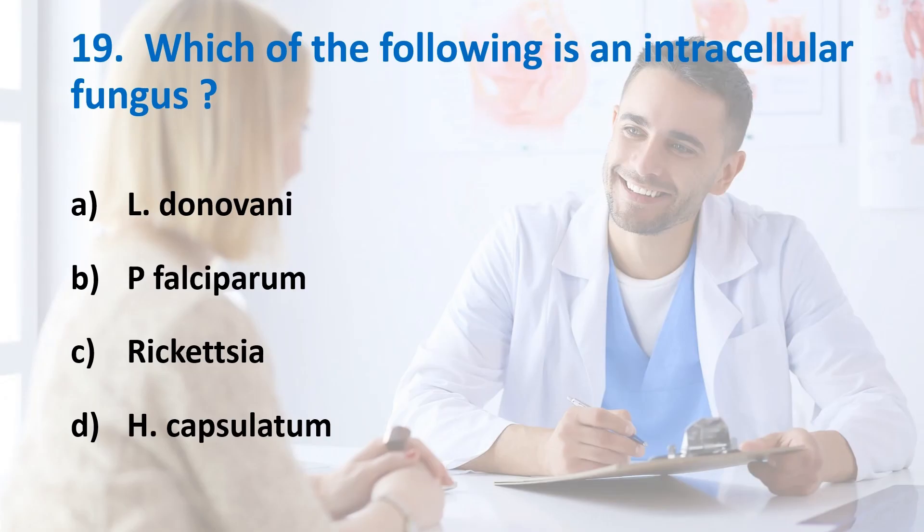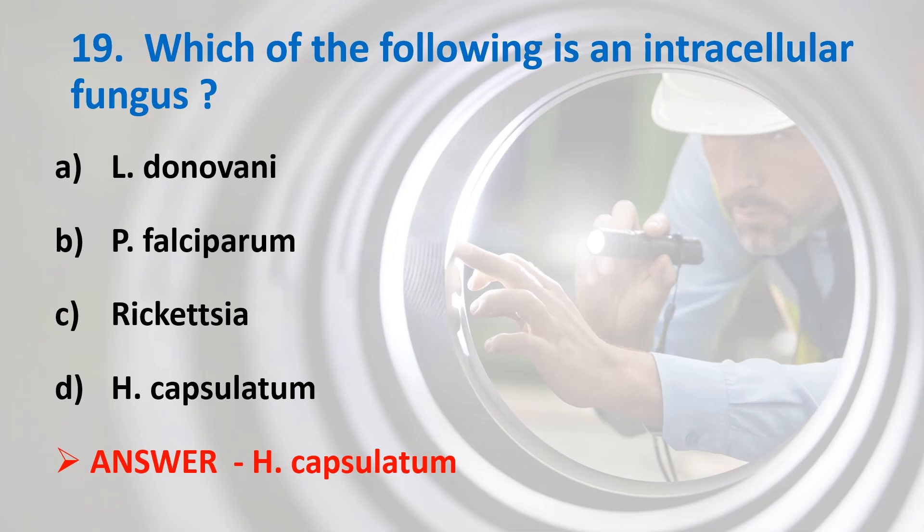Last question: Which of the following is an intracellular fungus? Options: Leishmania donovani, Plasmodium falciparum, Rickettsia, Histoplasma capsulatum. Answer is Option D, Histoplasma capsulatum. Leishmania donovani and Plasmodium falciparum are parasites and Rickettsia is a bacteria. Thank you for watching.